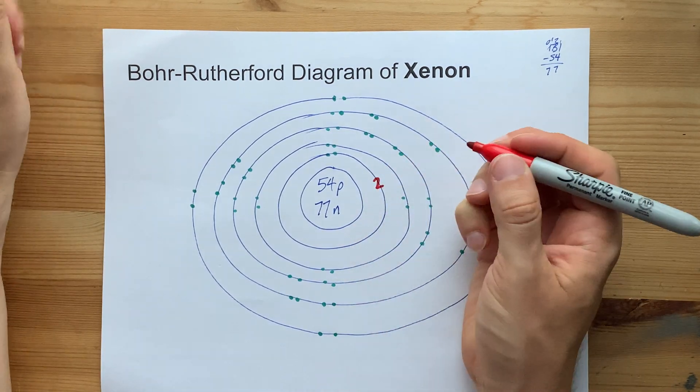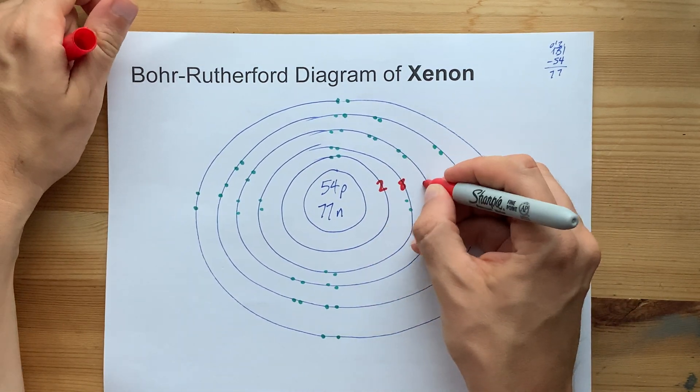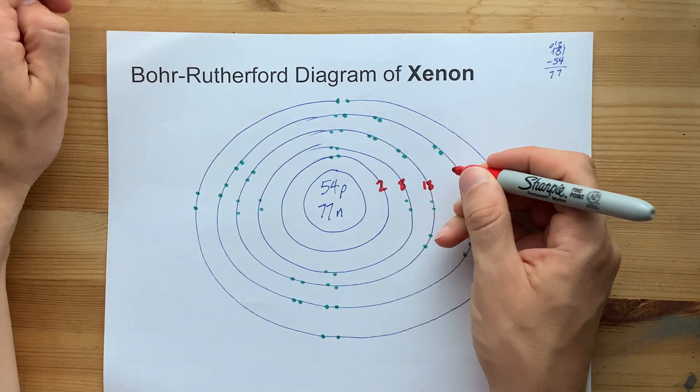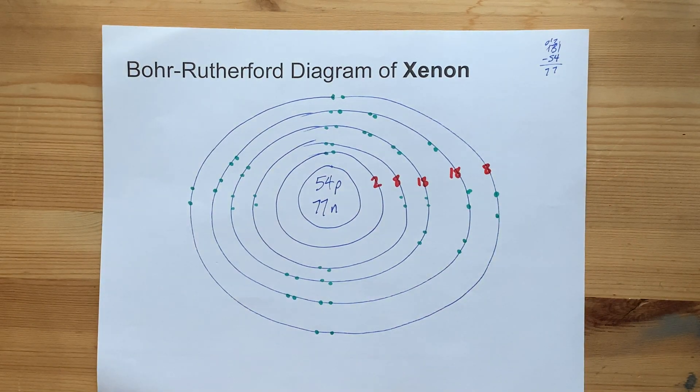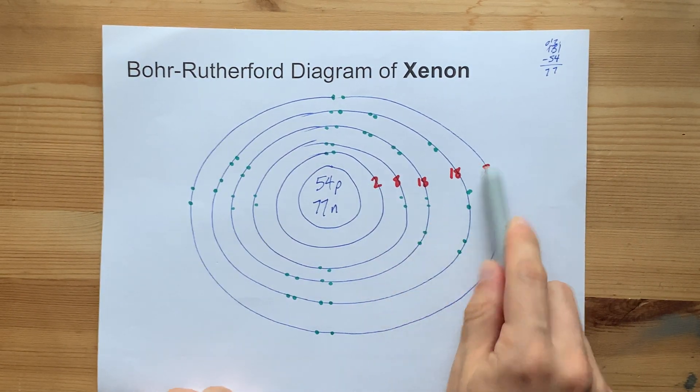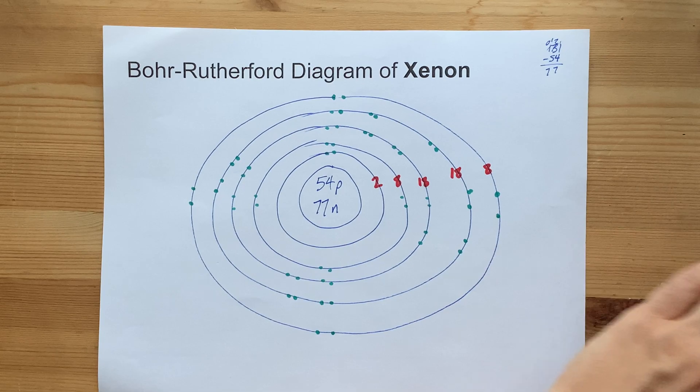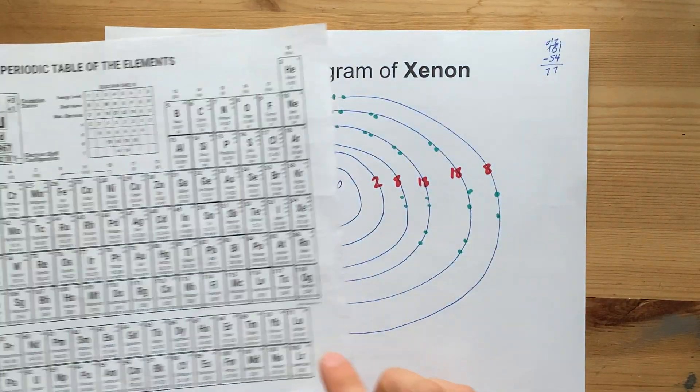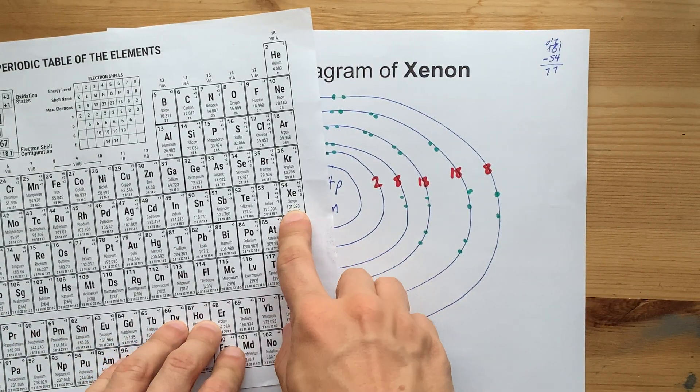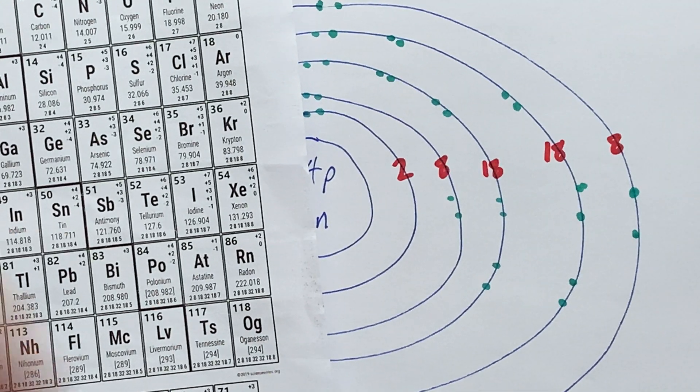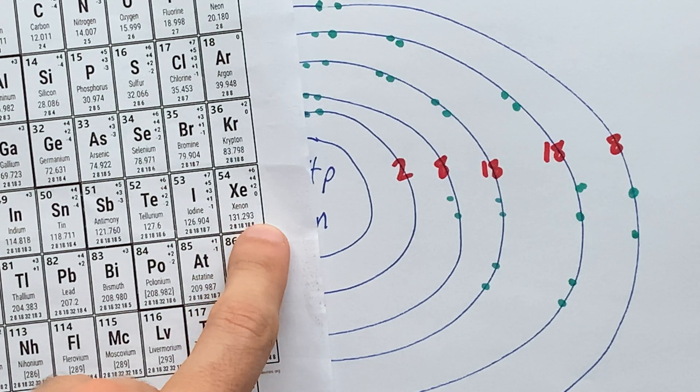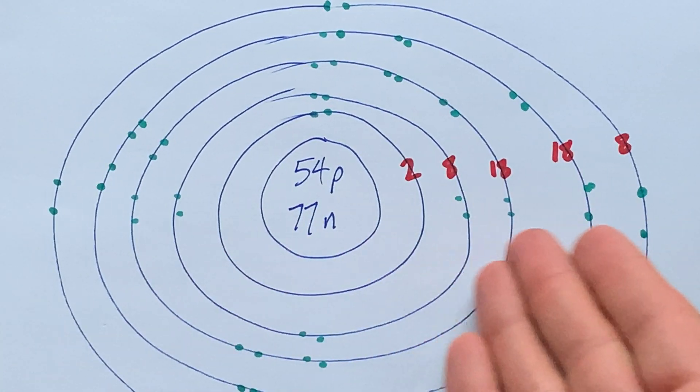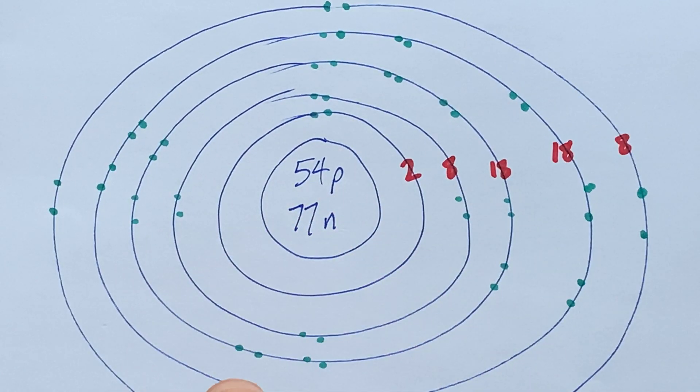This is your Bohr-Rutherford diagram for xenon. It has 2 electrons in the first shell, 8 in the second, 18 in the third, another 18 in the fourth, and 8 in the fifth. I think if you add all those together, you're going to get 54. And if you're wondering if I'm right, I am. See, xenon is here on my periodic table, and if you look at the electron arrangement that's written here, 2, 8, 18, 18, 8. I'm right, and so are you, because you are following along with the absolute champion, me. Best of luck.